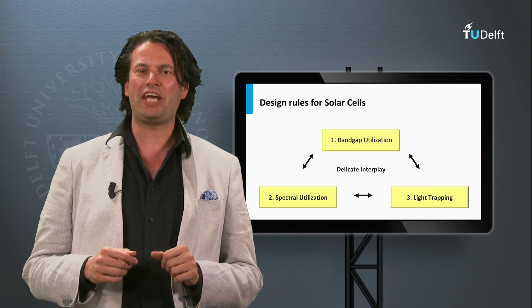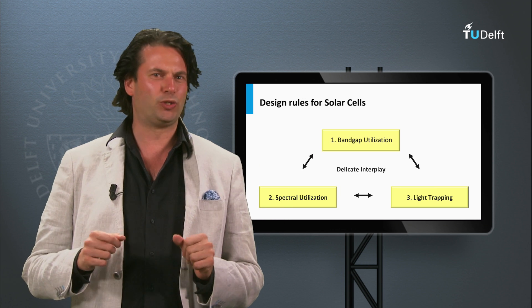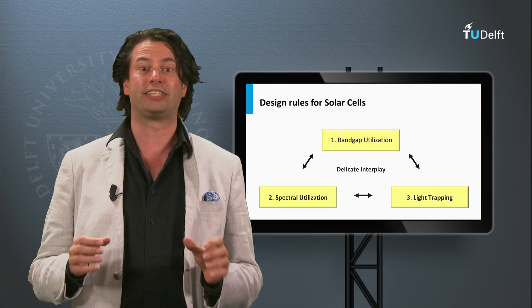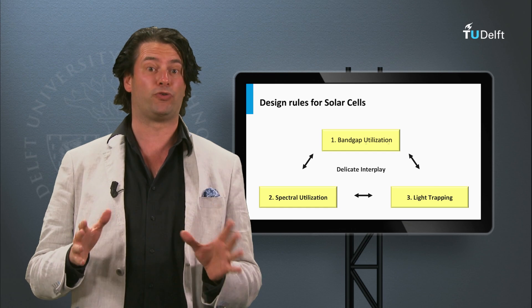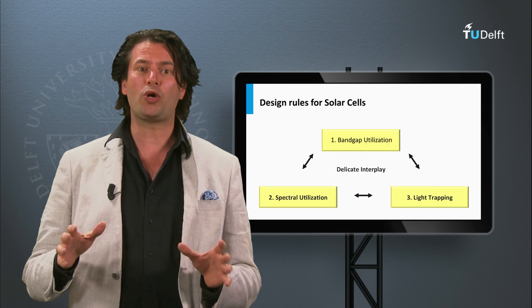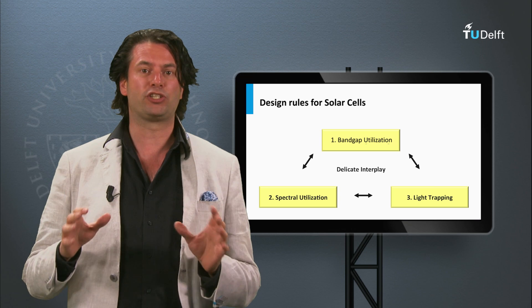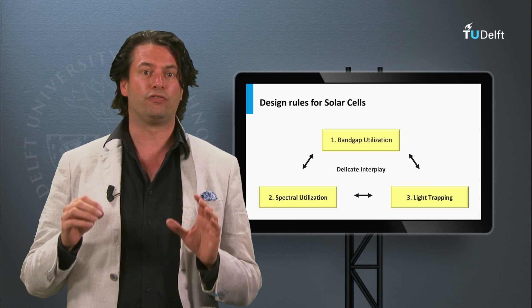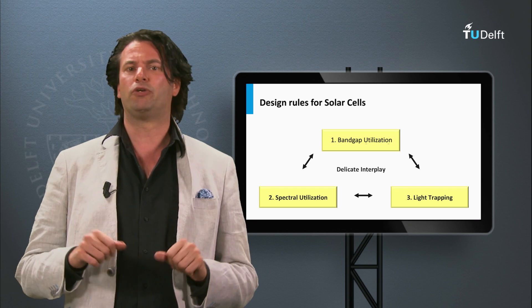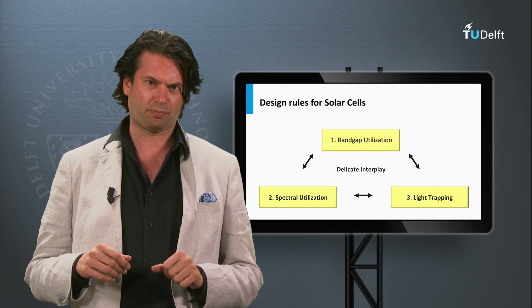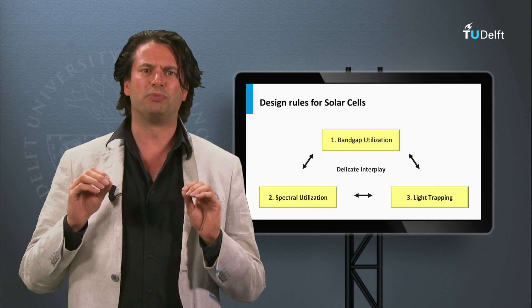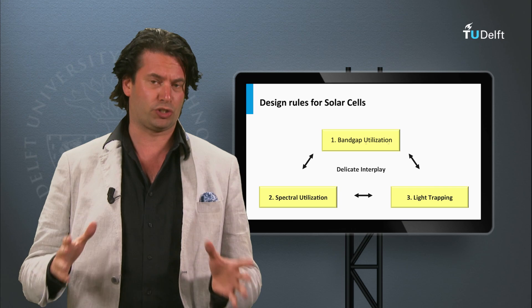In the last two weeks we have discussed the working principle of a solar cell and the external parameters that define the performance of a solar cell. Now we are going to look at how various solar cell concepts and photovoltaic materials affect the performance of a solar cell. For that we have to look at some general design rules for solar cells.